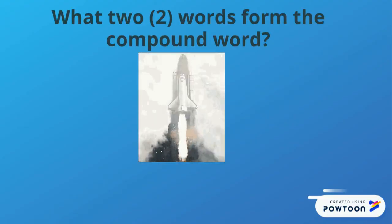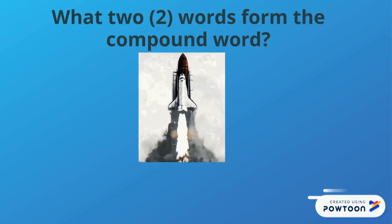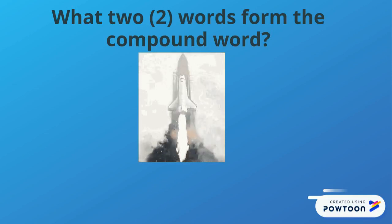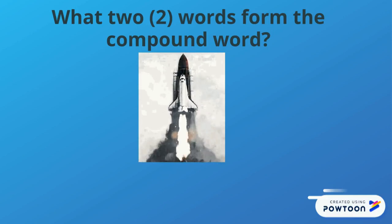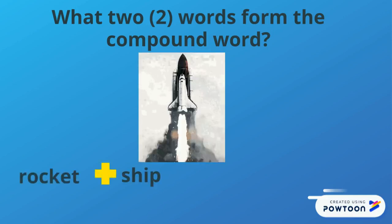All right, here's the last one. What do you see? A rocket ship. What two words form a compound word — rocket ship? Think about it. Great — rocket and ship forms the compound word rocket ship.